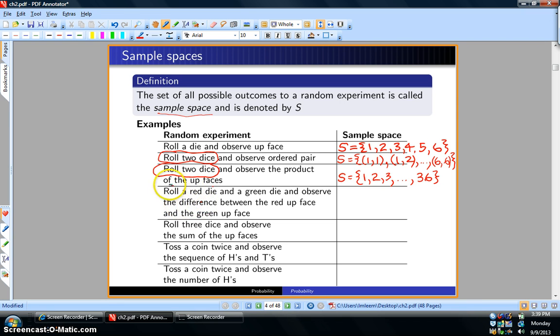The fourth example is rolling two dice—one red and one green—and observing the difference between the red face and the green face. In this case, the sample space can be as low as negative five when you get one and six, all the way up to five when you have six and one.